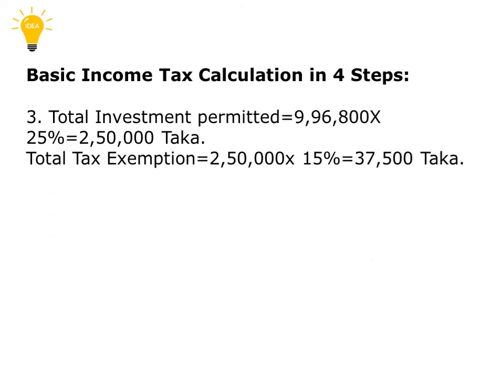In the next step, we find that if a person is earning 9,96,800 Taka, the total tax is 79,800 Taka. As total basic pay, he or she is permitted to invest 25% of that, which is approximately 2.5 lakh Taka. The total tax exemption is calculated as 15% of that invested amount, which comes to 37,500 Taka. That is the total tax exemption.